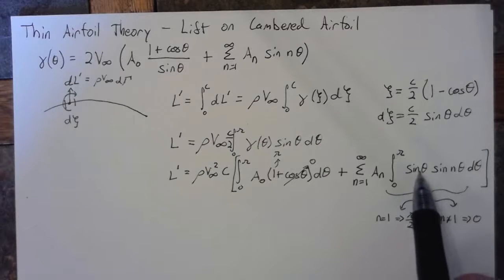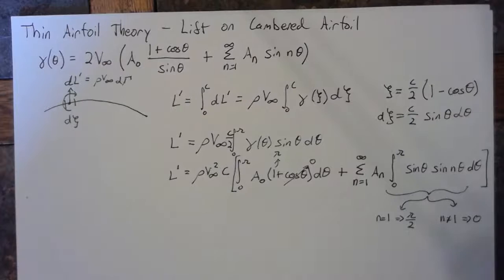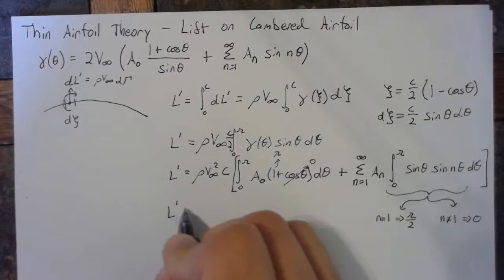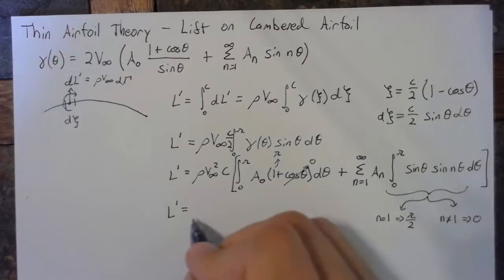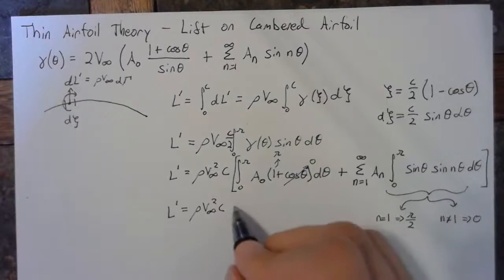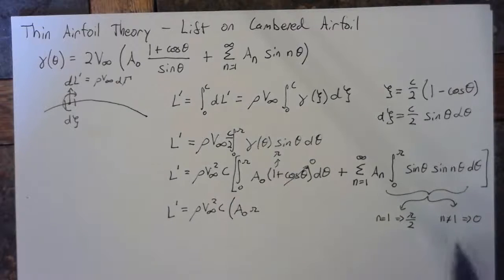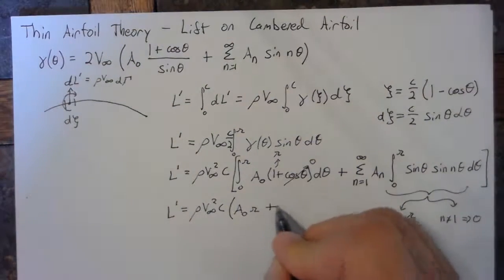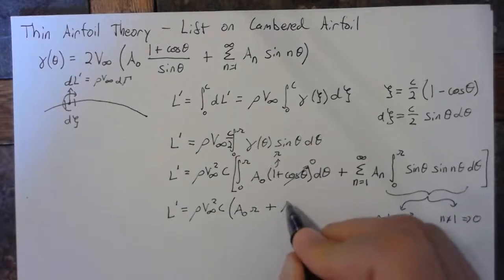And this comes from recognizing that this m term in front of this theta would equal 1. So the only case where m equals n is when n equals 1 as well. Now this means that our lift will equal rho times v infinity squared times c. And then we'll have an a0 pi. And we only need to worry about the a1 term over here, which means that we can represent this entire infinite sum as a1 times pi over 2.